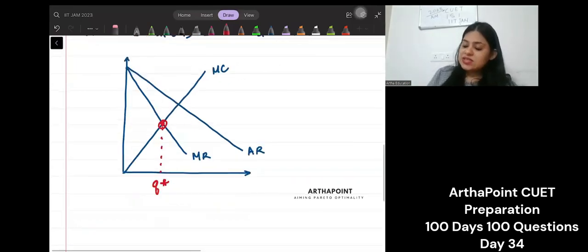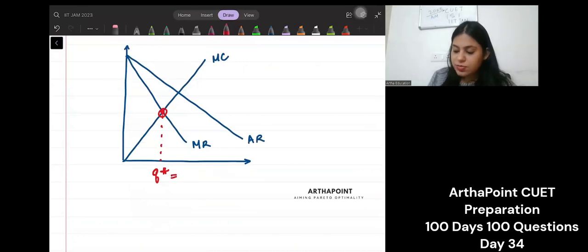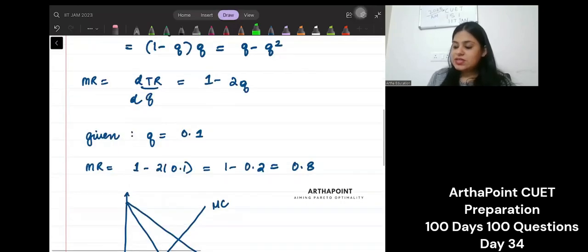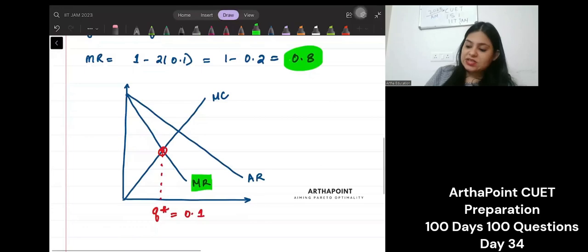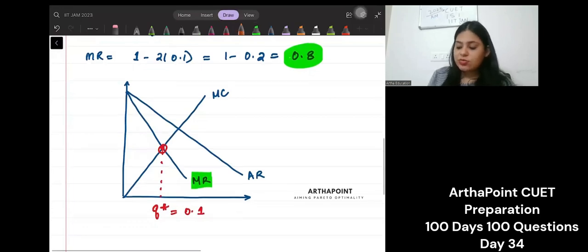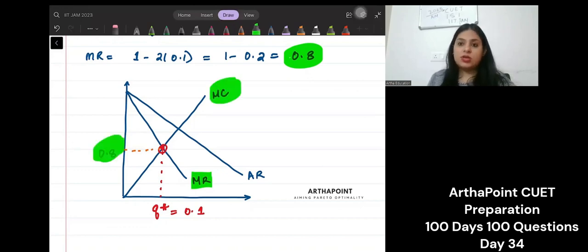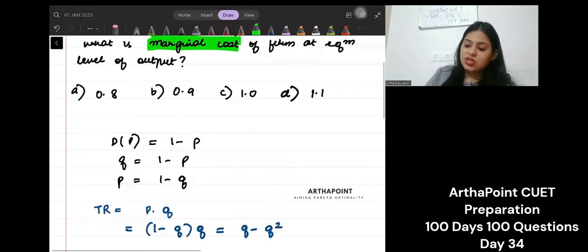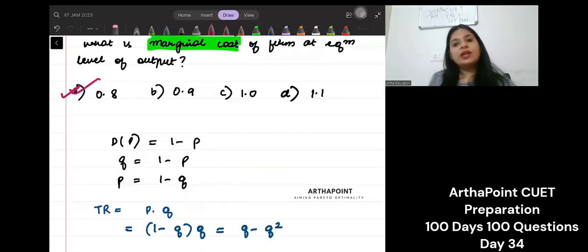This clearly tells us that this short run equilibrium quantity is 0.1. I have gone ahead and found out the marginal revenue of the firm that it is 0.8 at the 0.1 units. So won't the marginal cost also be 0.8? It could be. So what is the answer to this question? That the marginal cost will be 0.8.